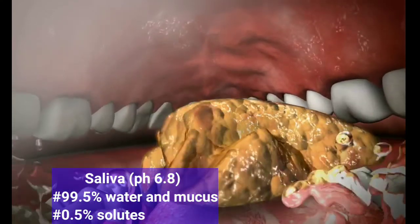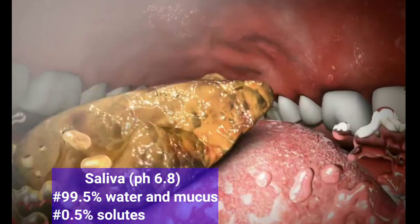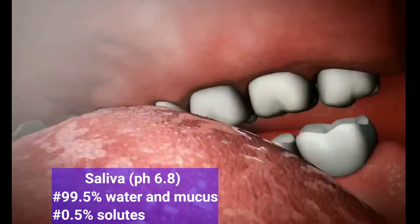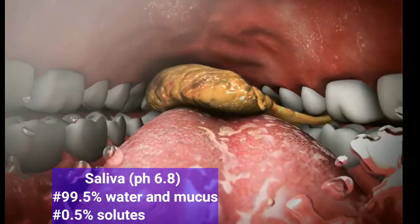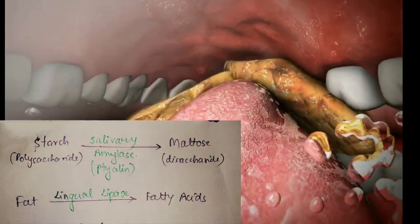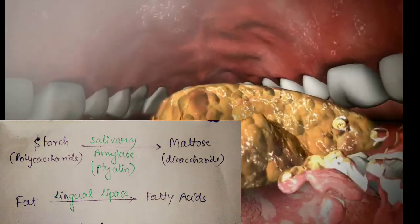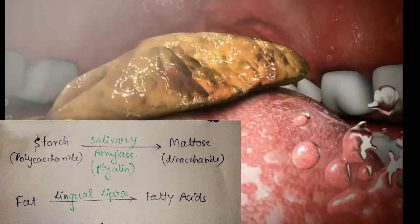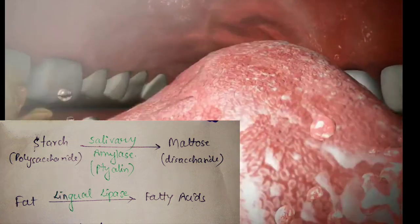Saliva also contains antibacterials like lysozyme enzyme, thiocyanate, and IgA antibody. Saliva also contains digestive enzymes like salivary amylase or ptyalin, which breaks starch and polysaccharides into maltose disaccharide, and lingual lipase breaks fat to fatty acids.